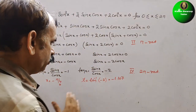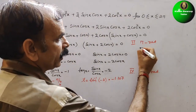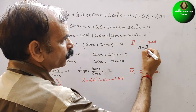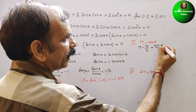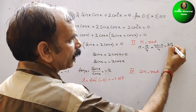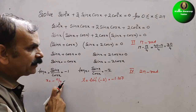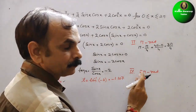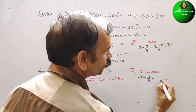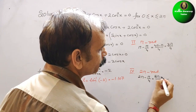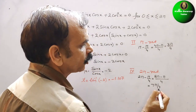Substituting π/4: in the second quadrant we get π − π/4 = (4π − π)/4 = 3π/4. That is the first solution. In the fourth quadrant we get 2π − π/4 = (8π − π)/4 = 7π/4. That is the second solution.